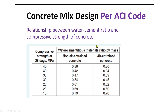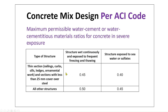The relationship between water-cement ratio and compressive strength of concrete: for 30 MPa at 28 days for non-air-entrained concrete, the water-to-cement ratio is equal to 0.54. For maximum permissible water-to-cement ratio for concrete in severe or aggressive exposure, we reference the corresponding table.